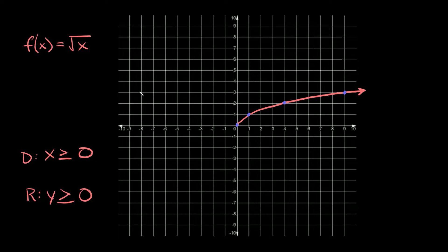Here we have f of x is equal to the square root of x, the square root parent function. It's basically like half of a parabola on its side, running through the critical points zero zero, one one, four two, and nine three. The domain is all x values greater than or equal to zero, and the range is all y values greater than or equal to zero — because when you take the square root of a number the result is always positive.